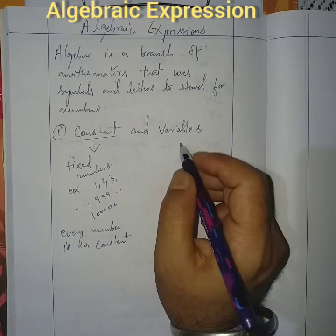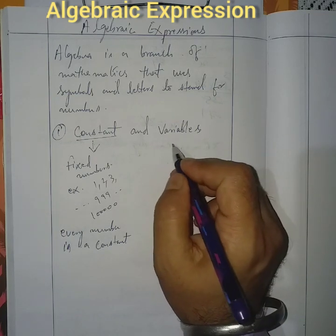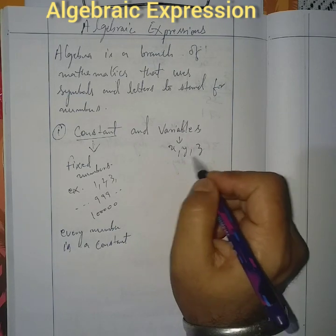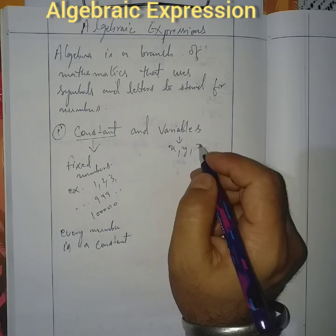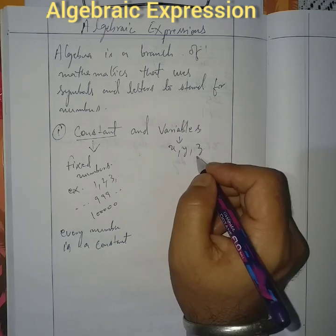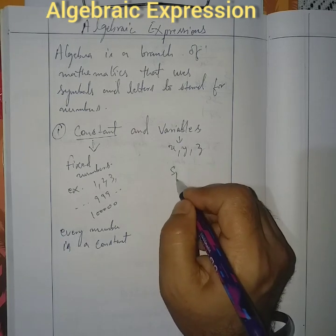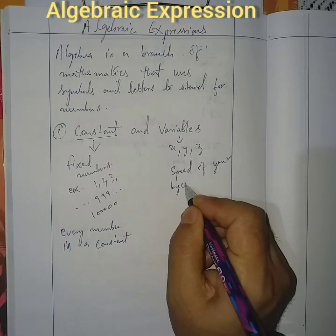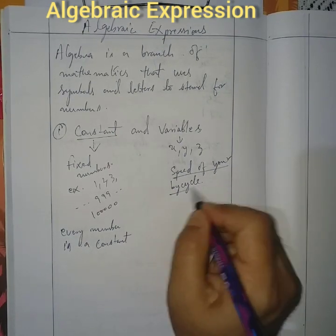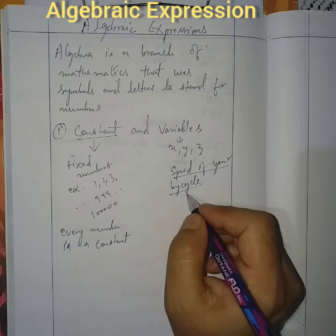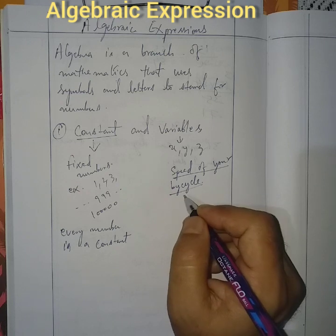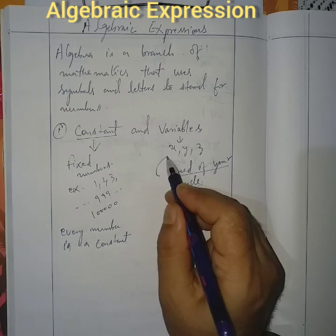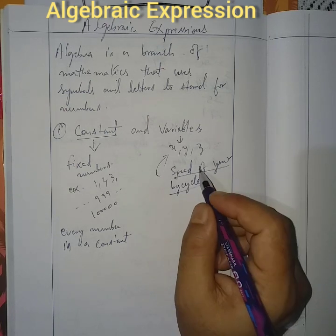Variables are symbols taken from English alphabets like X, Y, Z. As it is a variable, it changes its values time to time according to situations and according to the problem. For example, the speed of your bicycle — when you ride a bicycle, the speed changes according to time and situations. That speed is represented by a letter and is called a variable.